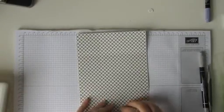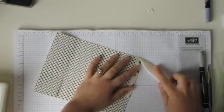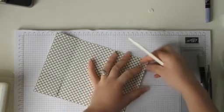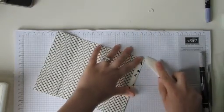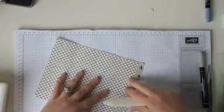Now use your bone folder and just fold the lines and fold at the score lines. And the bone folder just make sure you get a nice crisp fold.